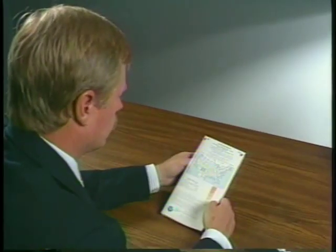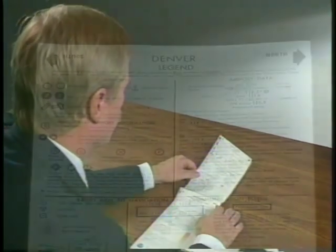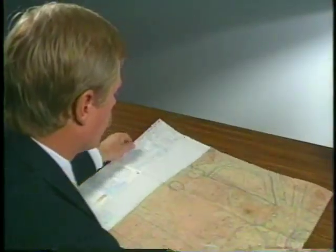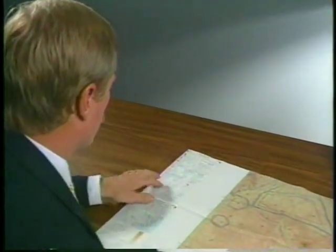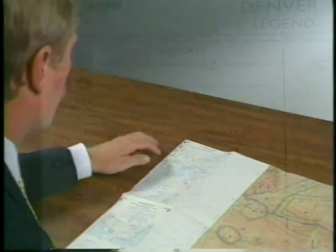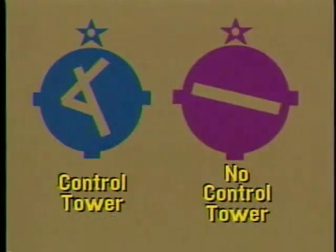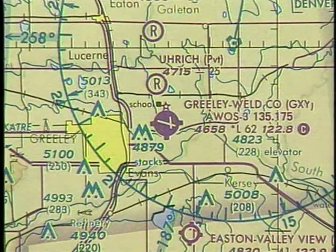Now let's look at how to interpret the information on the chart. As you unfold the map, you will notice the legend on the back panel. At the top of each panel are the words north and south, indicating the chart coverage area is divided into north and south regions, with each one displayed on a different side. Of primary importance are the airport symbols. A blue symbol indicates an airport with a control tower, while a magenta colored symbol shows an airport without a tower. Airport symbols are shown in a variety of shapes.